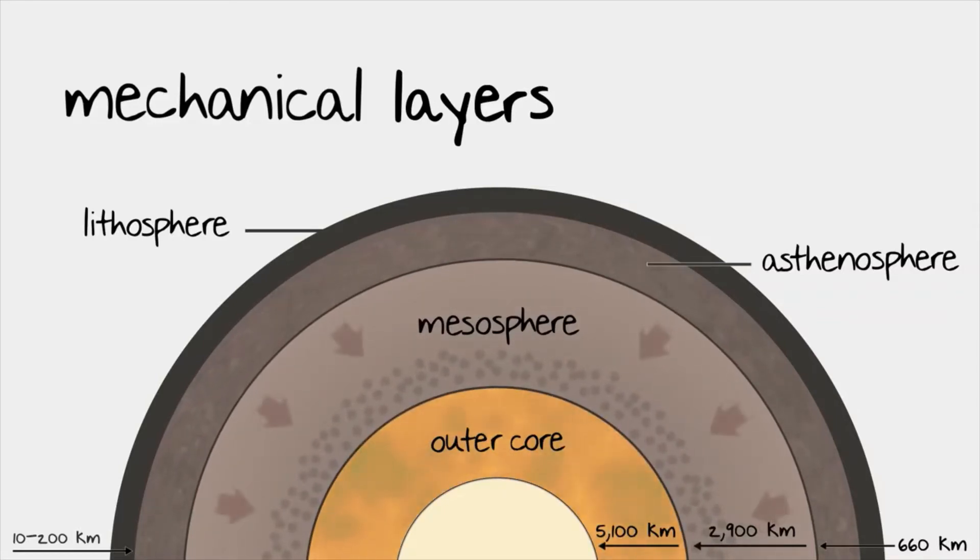Extremely high temperatures melt the metals contained in this layer into liquid form. Think flowing rivers of lava, and you'll have a pretty good idea of what the outer core is like.